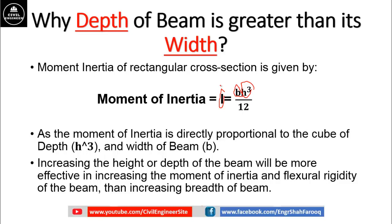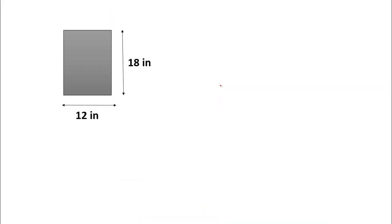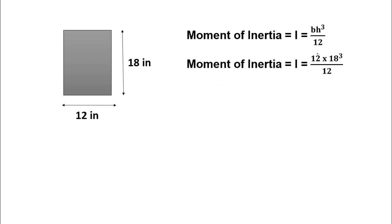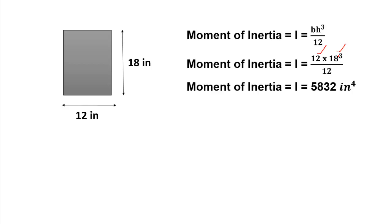This example will show that increasing height or depth of beam will increase the moment of inertia very effectively. A beam is taken having width 12 inches and height 18 inches. As we discussed, moment of inertia of a rectangular beam is equal to BH³ / 12. Putting in the values, moment of inertia equals 12 multiplied by 18 cubed, divided by 12. After doing simple calculation, we get moment of inertia for this section is 5832 inch⁴.